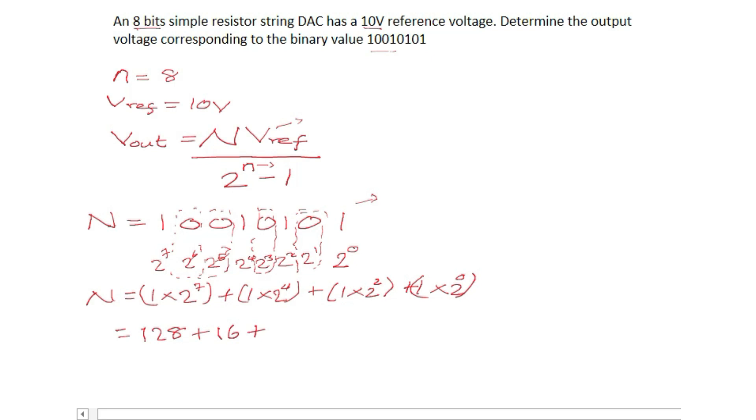So 2 raised to power 7, 1 times that will give us 128, plus 2 raised power 4 is 16, so times 1 still 16. Then 2 raised to power 2 which is 4 and the next one 2 raised power 0, anything raised power 0 we know it's 1.